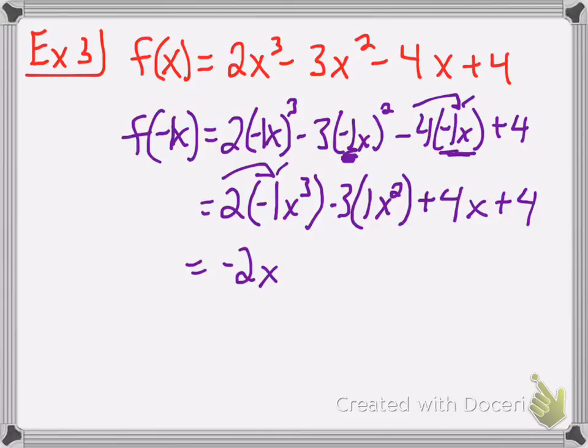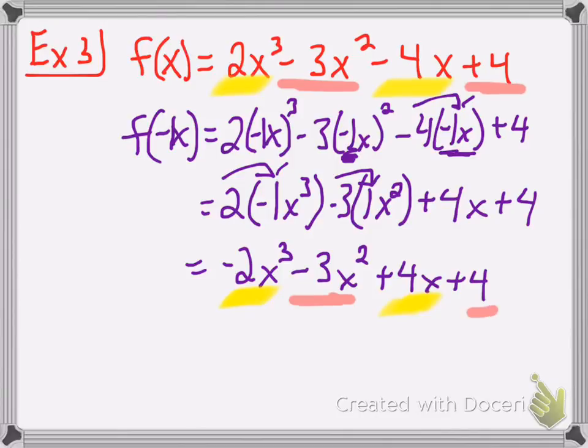Let's continue and distribute. That's negative two x to the third minus three x squared plus four x plus four. Now something peculiar happens. You look at this term, do I have the exact opposite? Yes. You look at this term, I have the exact opposite. But what didn't change? The negative three x squared didn't change when I plugged in negative one x and the positive four didn't change obviously.